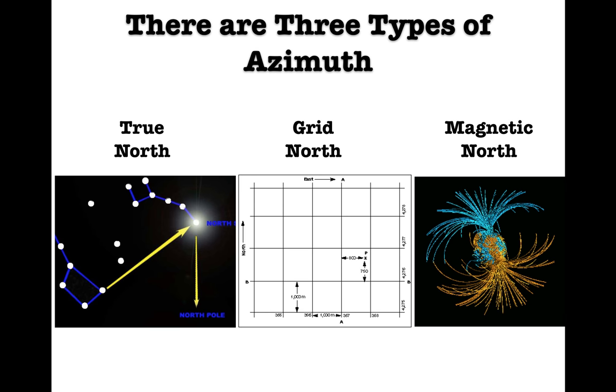Now the problem with these is that magnetic north shifts all the time and so it'll be different depending upon the map that you're on, the location of the world that you're in, and the year that the map is made because the magnetic north pole shifts.